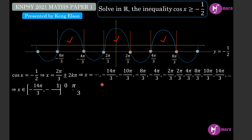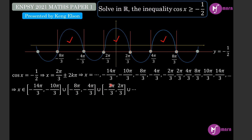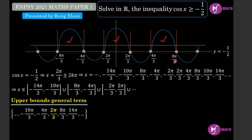We can deduce that the set of solutions are: the interval from negative 2π/3 to 2π/3, union from 4π/3 to 8π/3, from negative 8π/3 to negative 4π/3, and so on. Writing it as intervals we have: negative 14π/3 to negative 10π/3, negative 8π/3 to negative 4π/3, negative 2π/3 to 8π/3, and so on. This solution is very broad so we need to break it down by developing a general term for the upper bounds and the lower bounds.